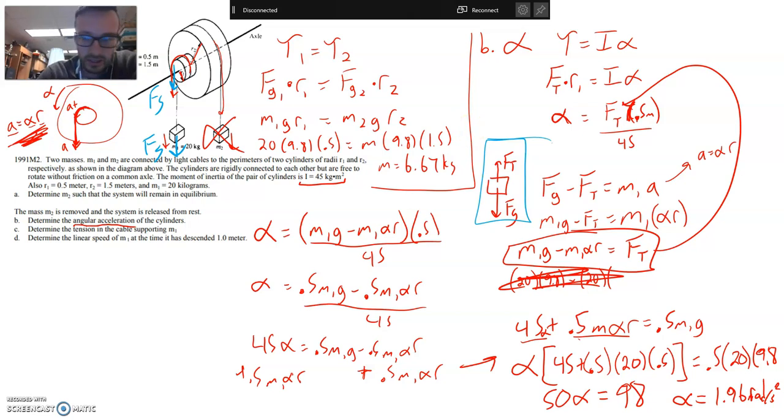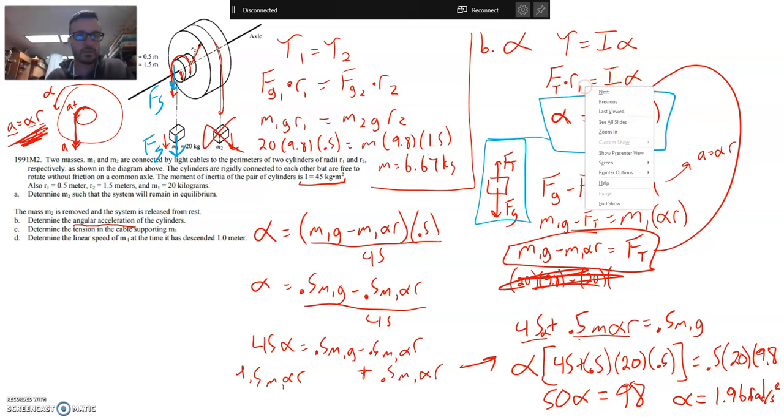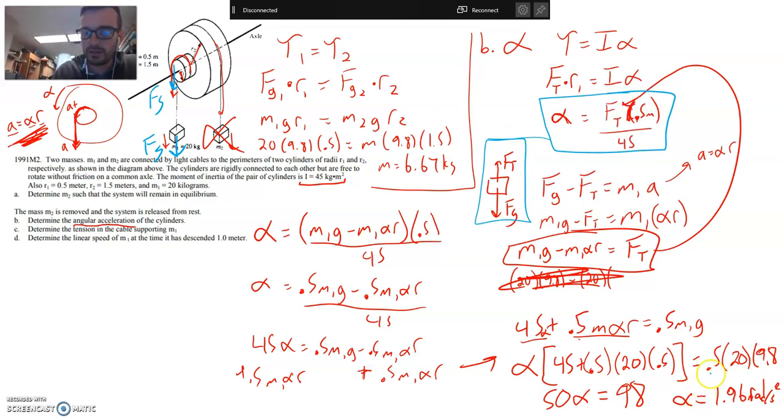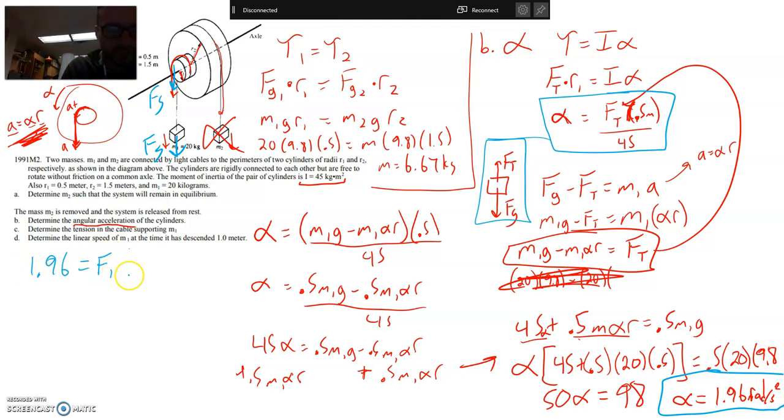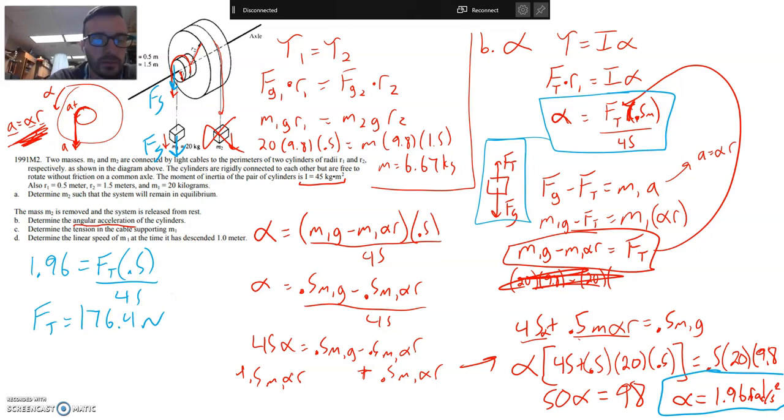All right. So finally, to turn the tension in the cable. So I'm going to look for my easiest equation that has FT in it. Here it is. All right. And I'm going to take that, and I'm just going to basically backtrack my solution for alpha into that. Okay. What does that mean? It means 1.96, that's alpha, equals FT times 0.5 over 45. So if you can algebra good, you can get the answer to that one. So let's see how that goes. 1.96 times 45 divided by 0.5. Looks like our force of tension acting on that is going to be 176.4 newtons. Solid. That wasn't bad at all.